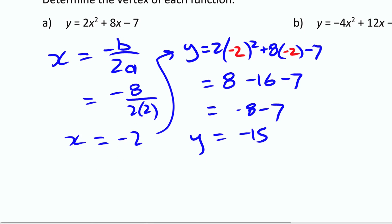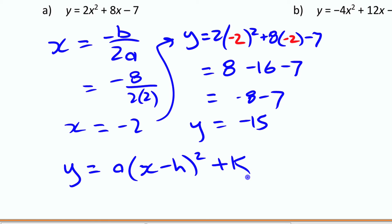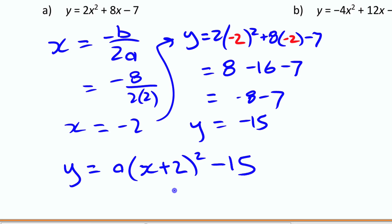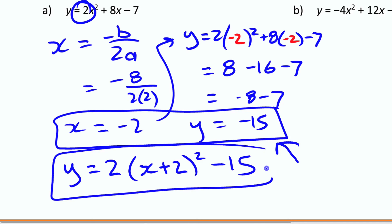You can now write the equation in vertex form, which is a(x − h)² + k. Since h = −2, you get x − (−2) = x + 2. Since k = −15, that term is −15. And the a value is the same in standard form and vertex form, so a = 2 stays. The vertex form is 2(x + 2)² − 15.